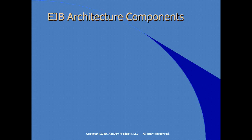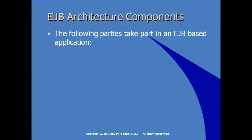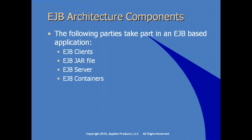There are specific components of an EJB architecture: EJB clients, the EJB jar file used to package the EJB, the EJB server — sometimes also referred to as the EJB container, as these terms tend to be used interchangeably — and the real meat of an EJB, which is providing a business interface and implementation class for your particular logic.